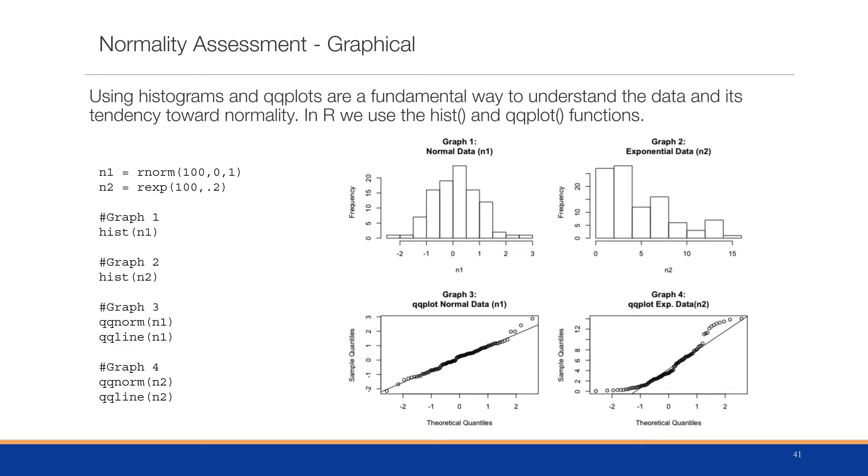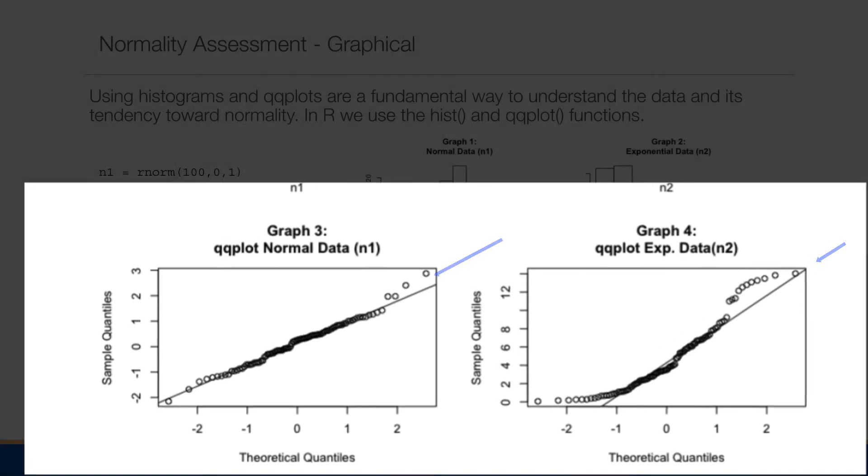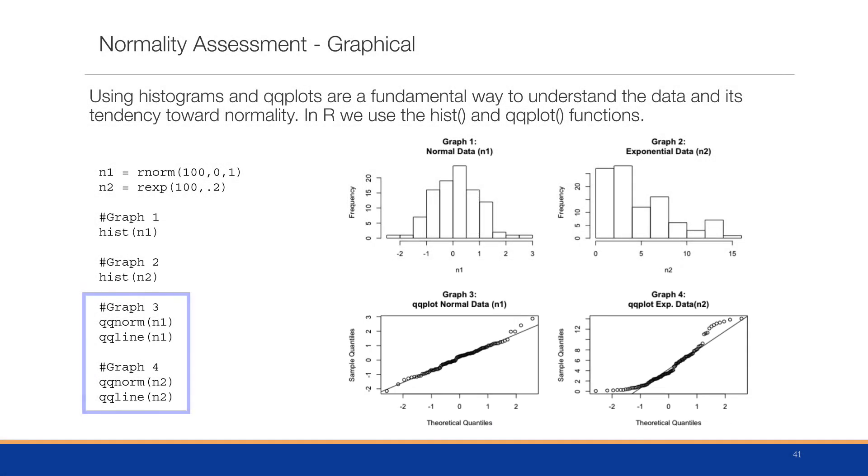The QQ plot is a nice way to tell us where the observations lie along a theoretical line. So for example, we're going to create a qqnorm and a qqline for each one of these. That solid line represents where the observations should lie. For a normal distribution, most of the data points should lie in the center with some slight deviations at the tails. So in the first case, we see that this normal data, all of the observations pretty much lie on that line. You don't have too much deviation, and then you get to the tail, and at the top tail, it gets a little bit further away from the line.